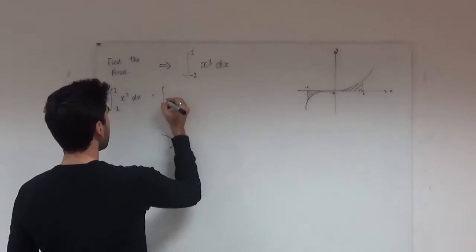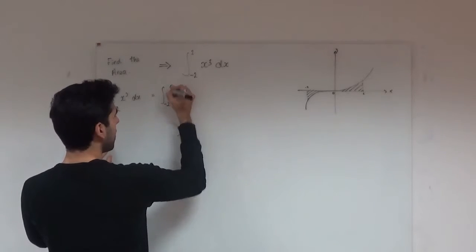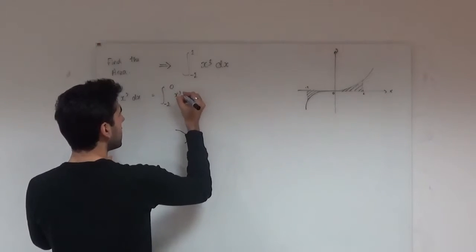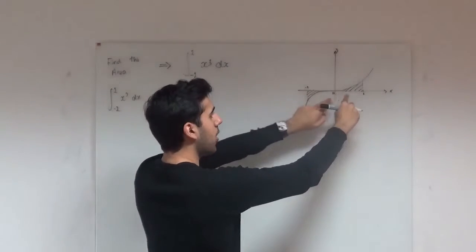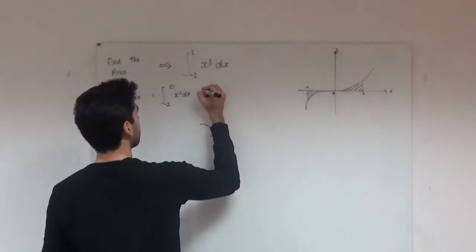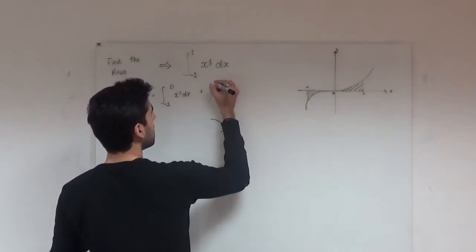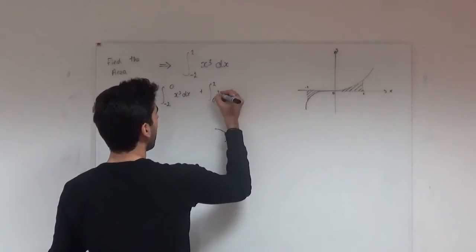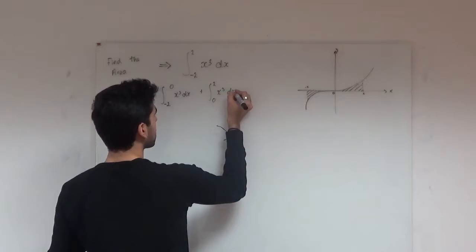So we have the integral going from minus 2 to 0 of x cubed dx. So that's that bit done and now I'm going to add on this bit. So we have plus the integral from 0 to 2 of x cubed with respect to x.